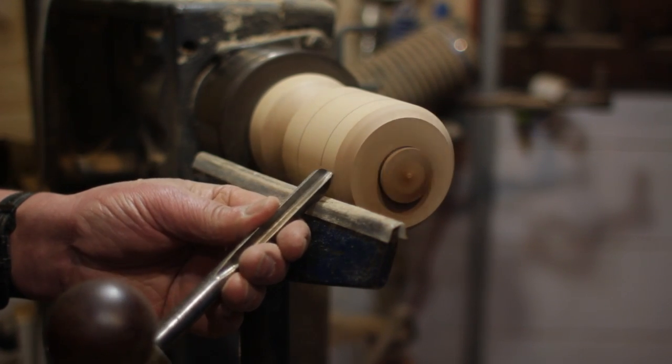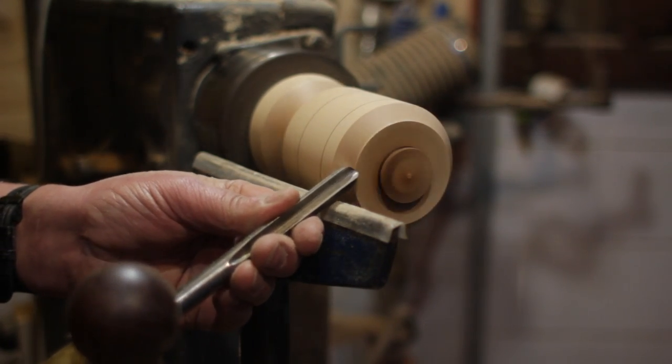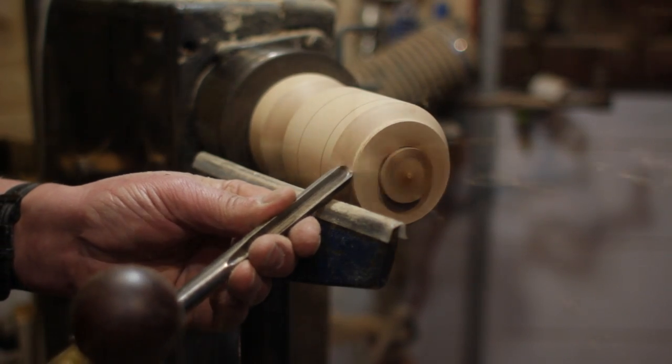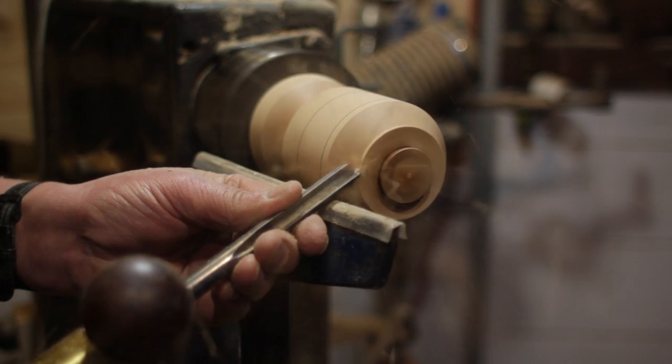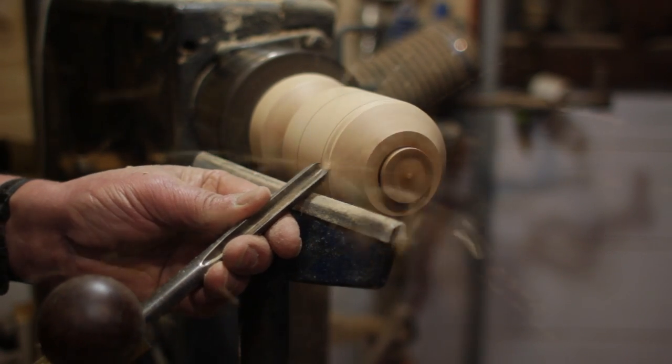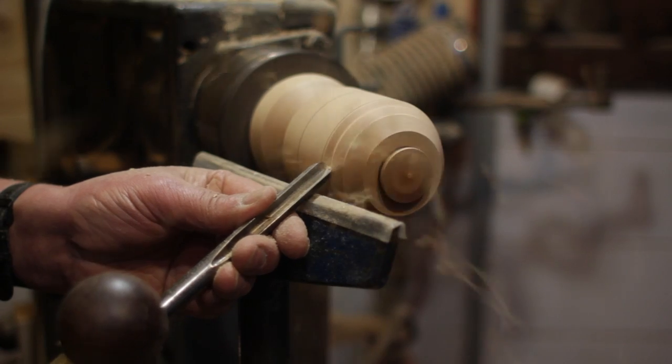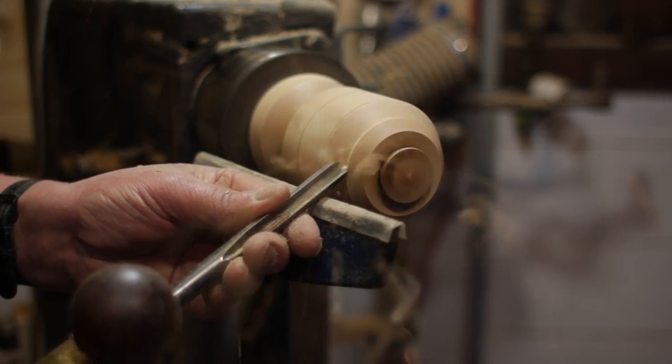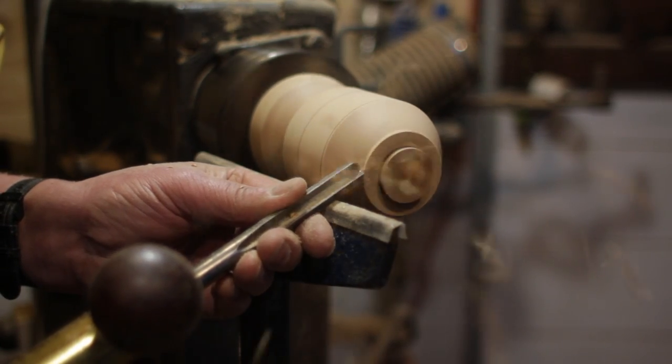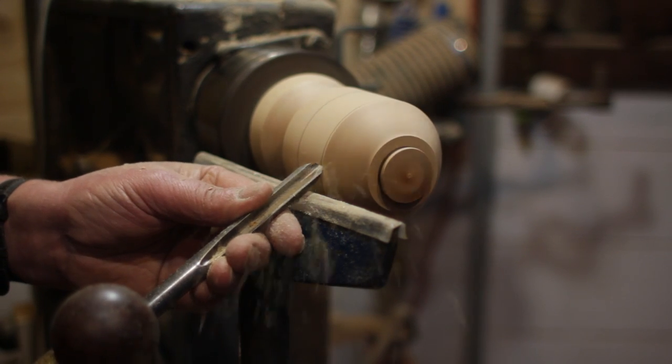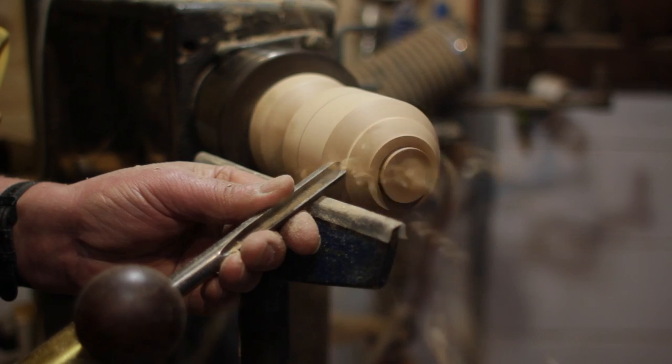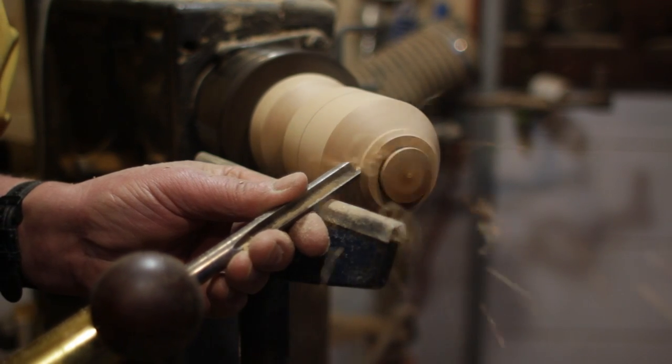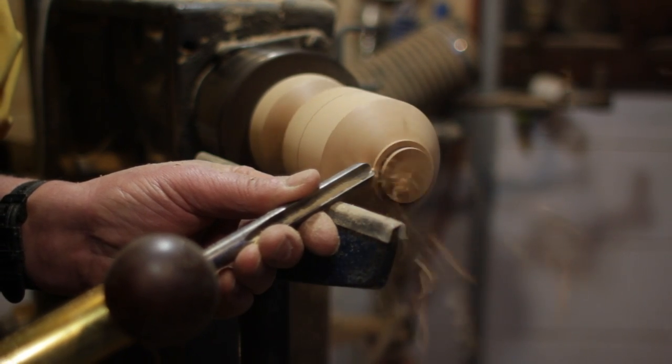Now with the gouge we cut away the waste wood between the two black lines. This cut should be straight black line to black line. So as this progresses the more accurate the cuts are at this stage the more accurate your sphere will become.